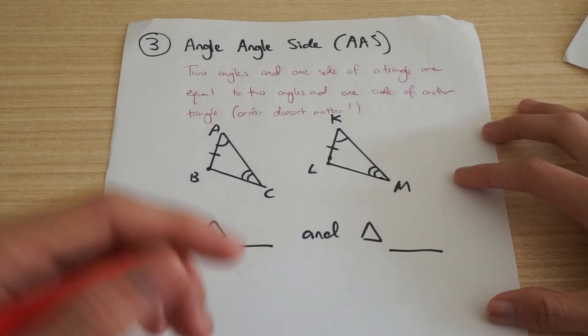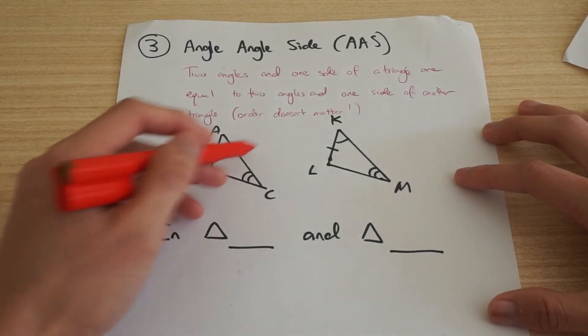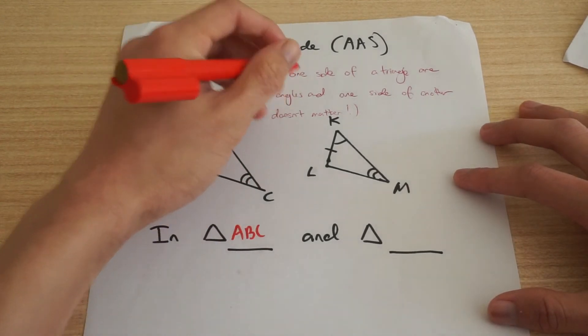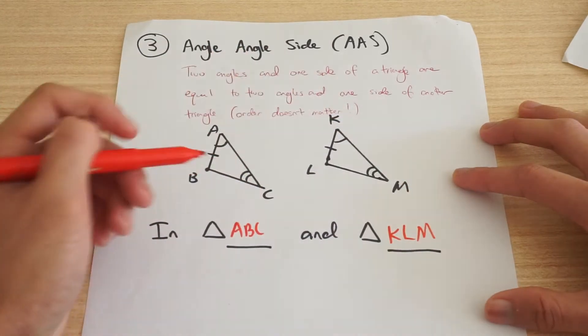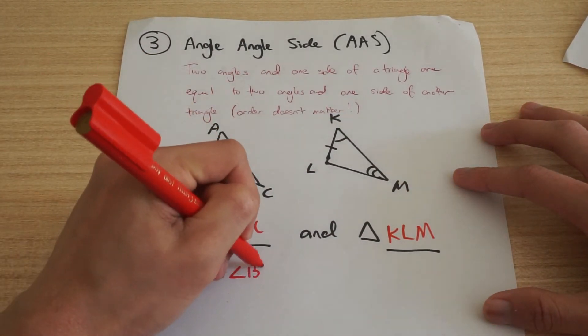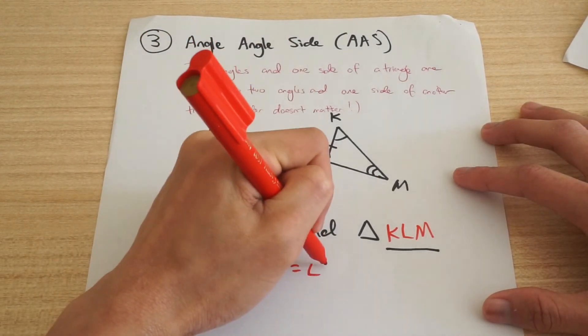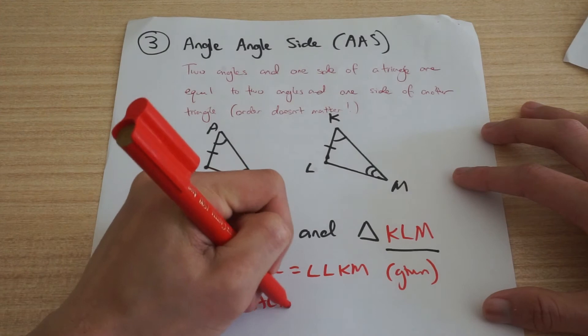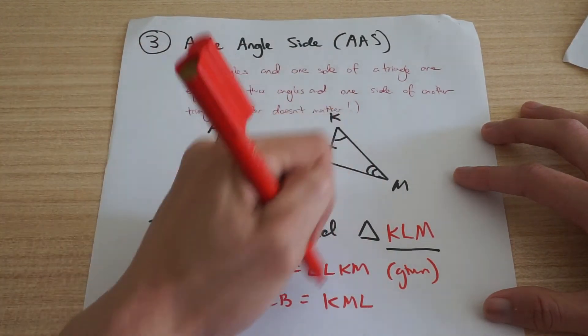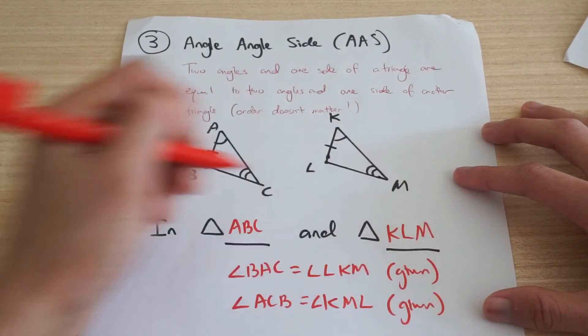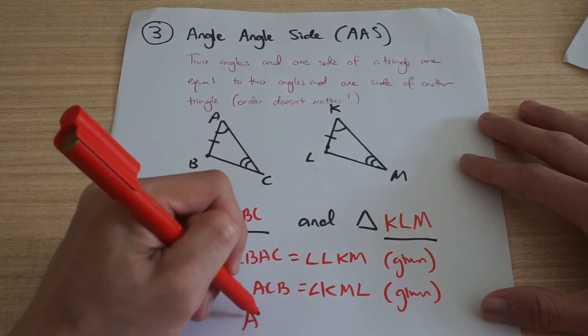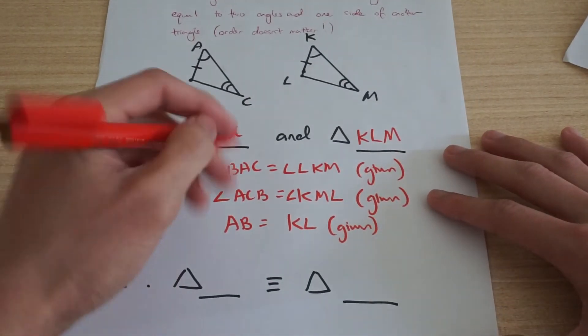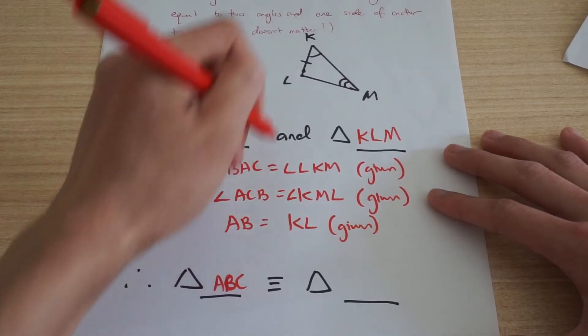Okay, angle angle side. So this one again, you want to look at the information you're given. You've got your two angles that are equal and your corresponding sides. So again, start off with the intro. ABC equals to KLM. And what do you know that's equal? I know that angle BAC is equal to angle LKM. And what else do I know? I know ACB equals to KML. And my last thing I want to talk about, I know that AB is equal to KL.